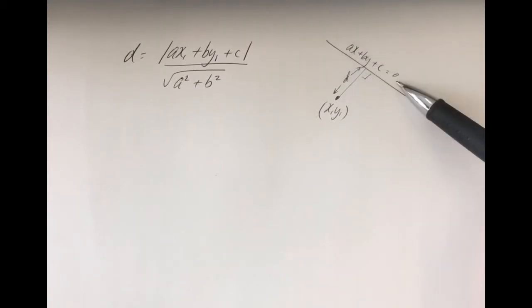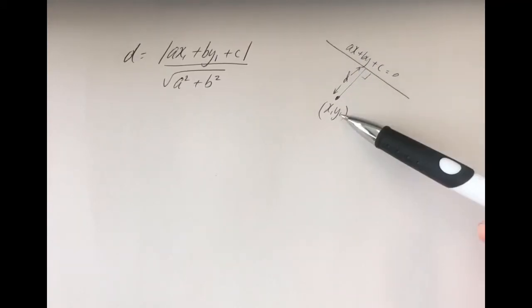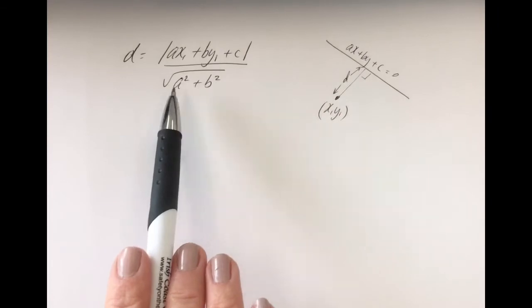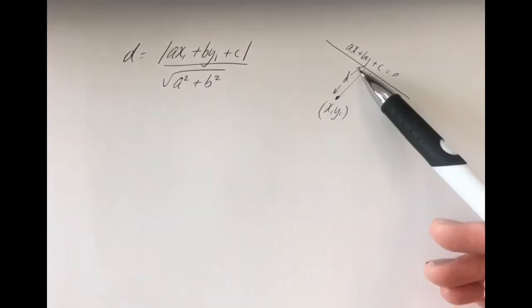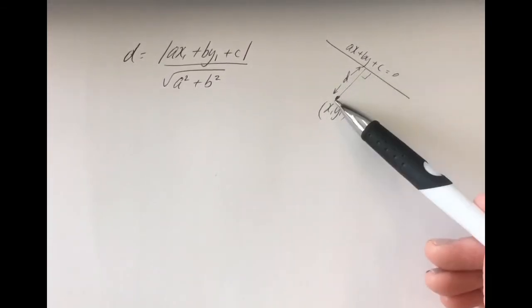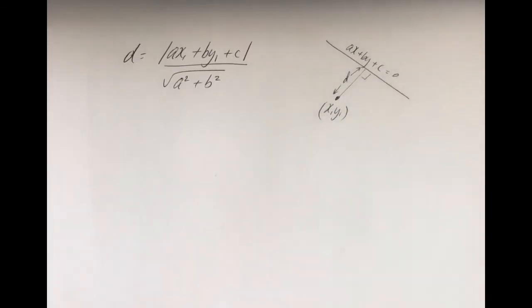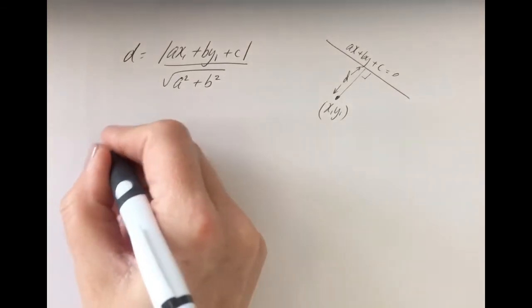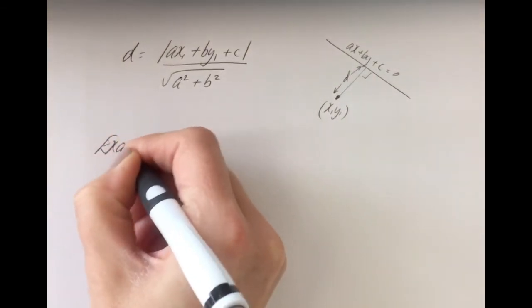Once you have the equation in that format and you have your point, then using this formula you will get the distance d between the point and the line. So we'll jump straight into an example here.